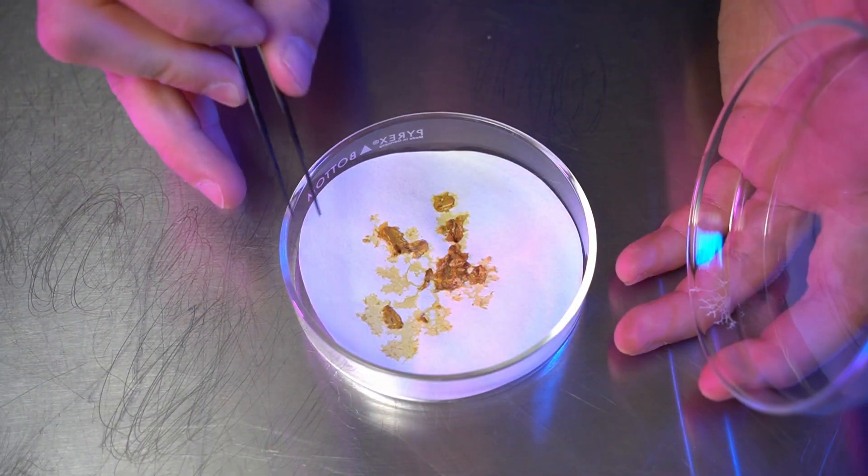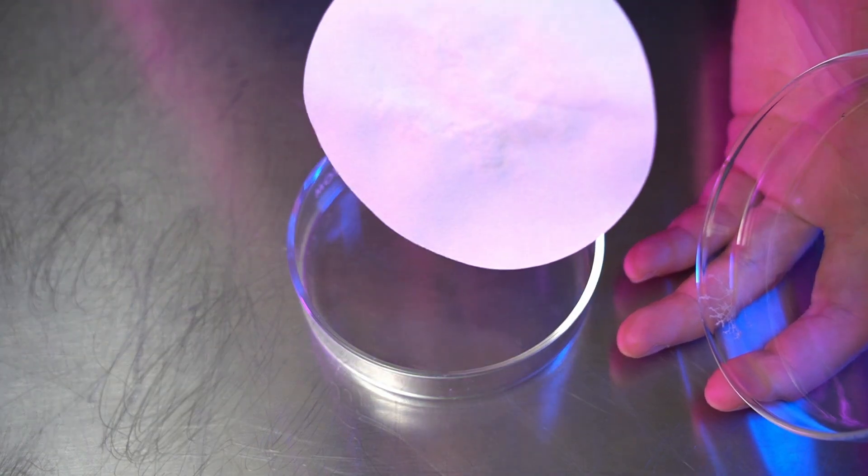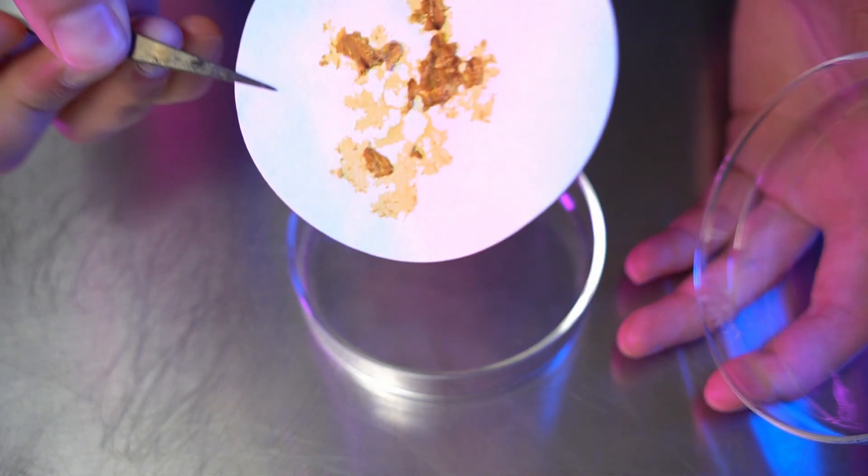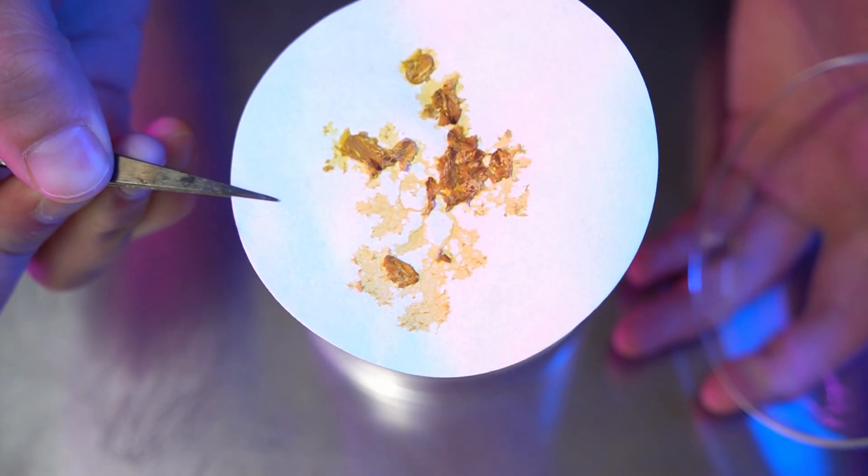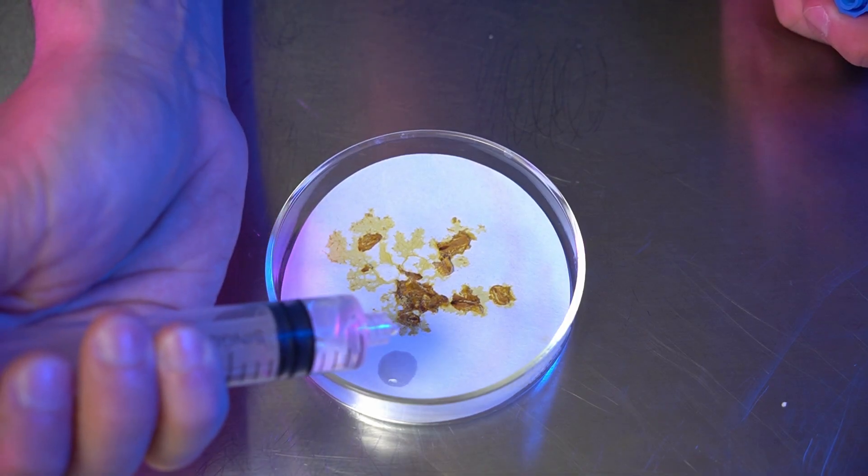One benefit of using filter paper is that you can dry out the culture on the paper disc and save it. This dehydrated, dormant form is called a sclerotium and can be revived by simply rehydrating the paper.